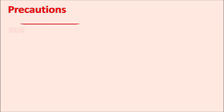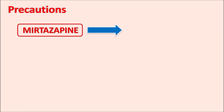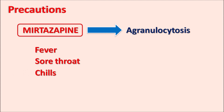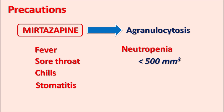What are the precautions? One important precaution is that Mirtazapine can produce agranulocytosis. This can increase infections along with symptoms like fever, sore throat, chills, stomatitis, sore mouth causing difficulty in eating, and neutropenia — the absolute neutrophil count may be reduced to less than 500 cells per cubic millimeter. It can also produce lowering of blood pressure resulting in hypotension. Whenever the drug is stopped, this agranulocytosis is also minimized in the patients.